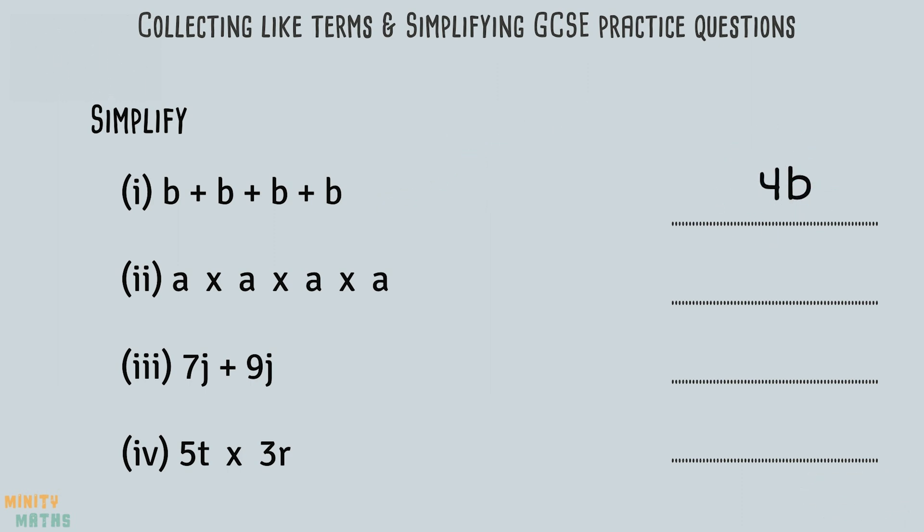The second question asks us to simplify a multiplied by itself four times. When we multiply a term by itself, we can use indices to show this in a simpler form. As we are multiplying a by itself four times, we can simply write a to the power of four.